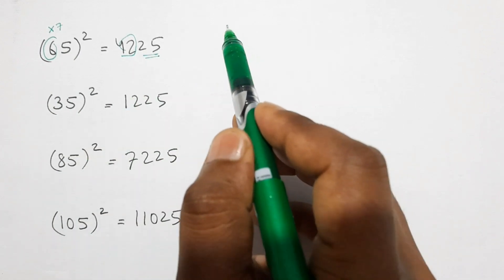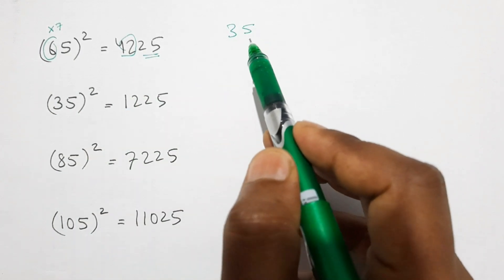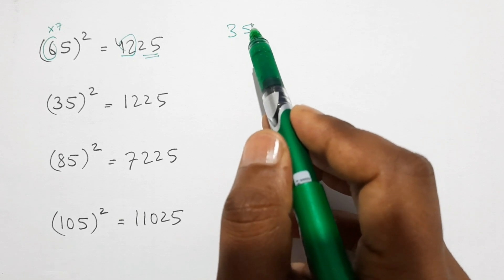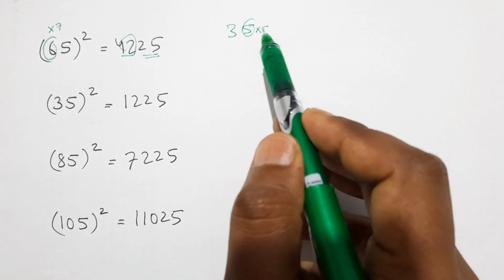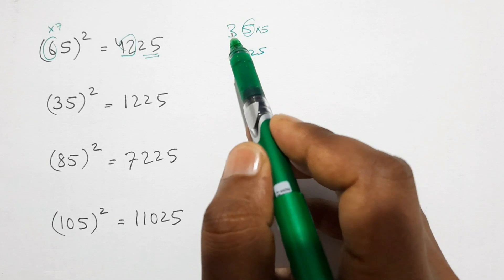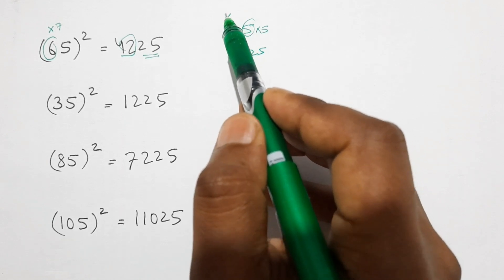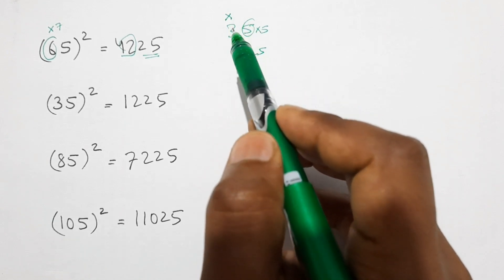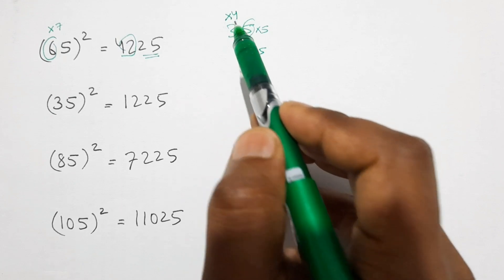Here also same thing like 35 square. What we are going to do is first we multiply this 5 by 5, that is 5 square is 25, and 3 we multiply it by number 1 more than 3, that is 3 times 4 equals 12.